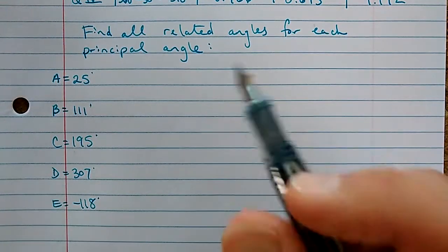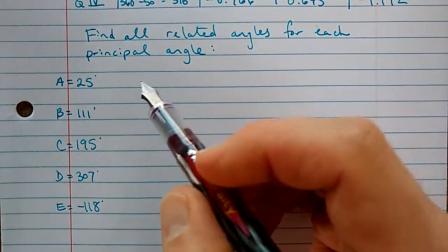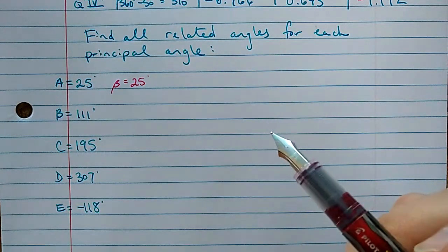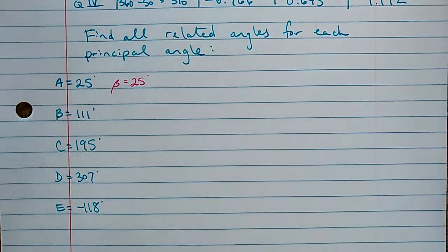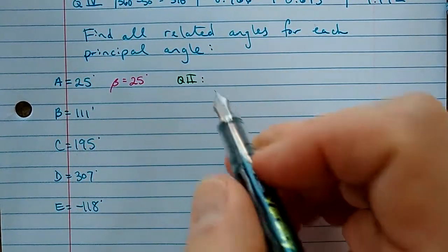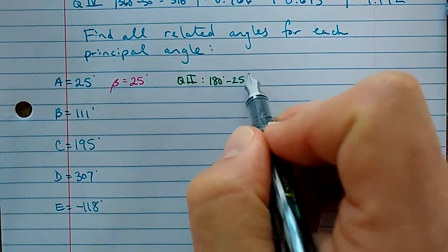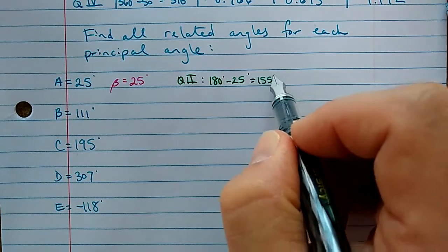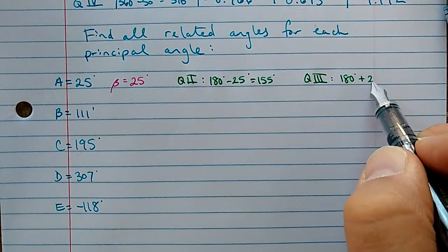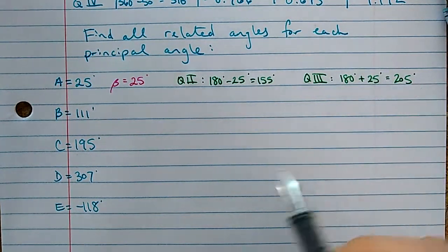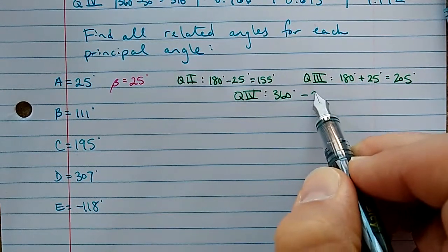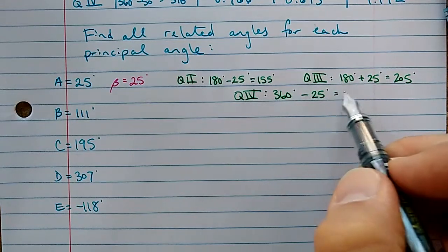Let's start talking about the first one. A is 25 degrees, which is already acute, so the related acute angle is actually the principal angle itself — 25 degrees. It's in quadrant 1. The quadrant 2 angle is 180 minus 25 equals 155 degrees. In quadrant 3 we go past 180: 180 plus 25 equals 205 degrees. And in quadrant 4: 360 minus 25 equals 335 degrees.